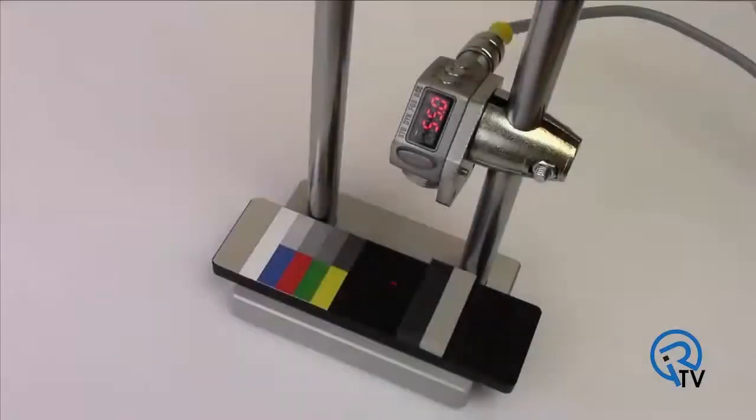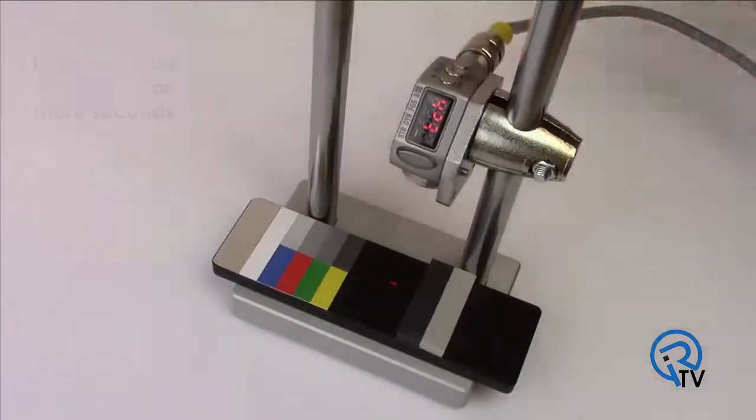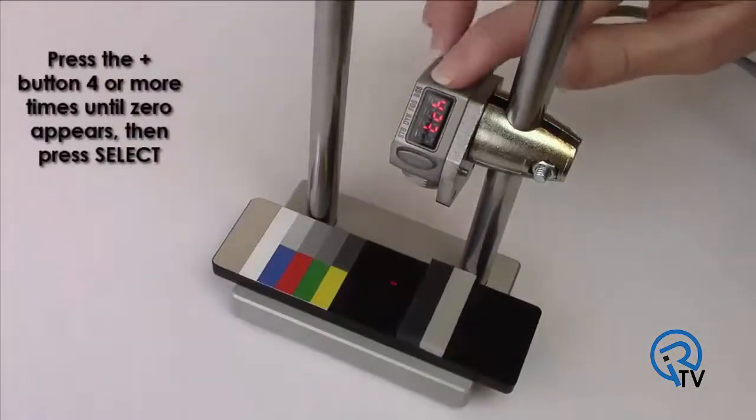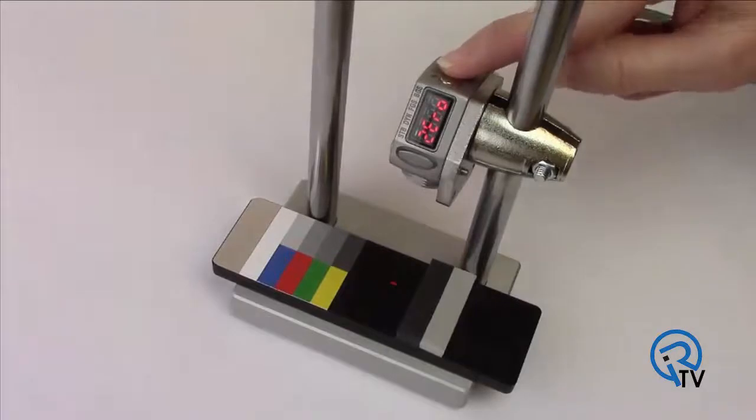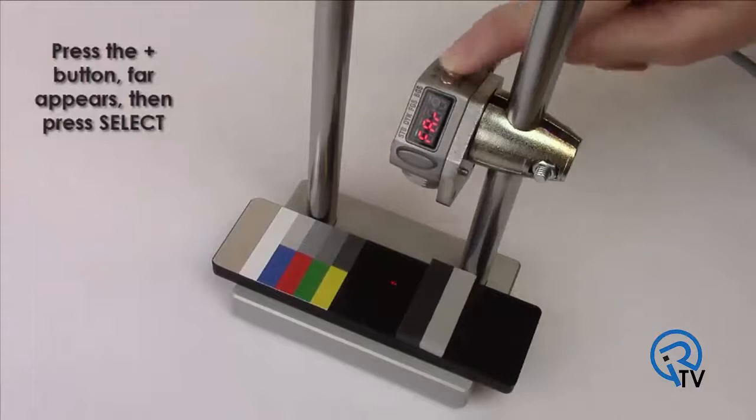The current distance is 55 millimeters. Press and hold mode for two or more seconds. Press the plus button four or more times until zero appears. Then press select. Press the plus button. Bar appears. Then press select.